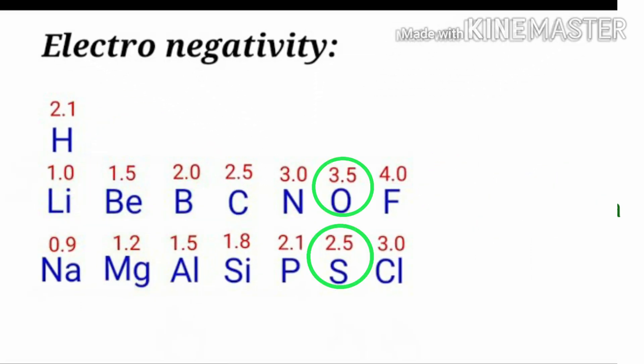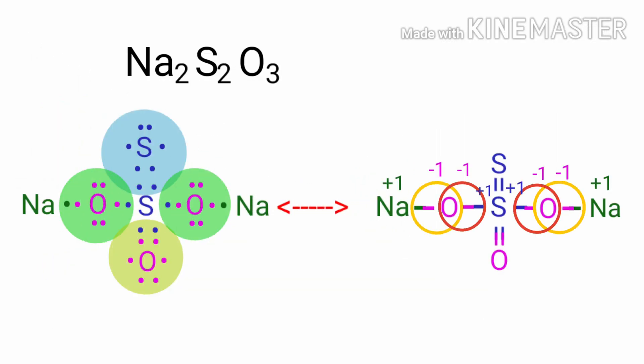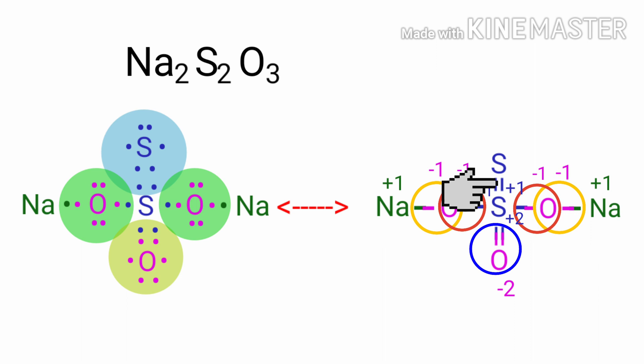Oxygen has more electronegativity than sulfur. So in the S double bond O, oxygen takes the two bonds towards itself. Therefore, the oxidation number of oxygen is minus two and the oxidation number of sulfur is plus two, because there are two bonds. In the S-S bond, the two sulfur atoms have the same electronegativity, so the oxidation number of both sulfur atoms in that bond is zero.